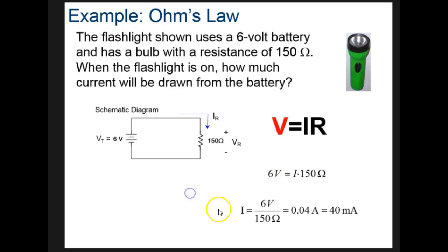Six divided by 150 gives us 0.04 amps, but that's a very small number and it's a little bit hard to work with. So what we're going to do is move this over three places to change amps into milliamps.